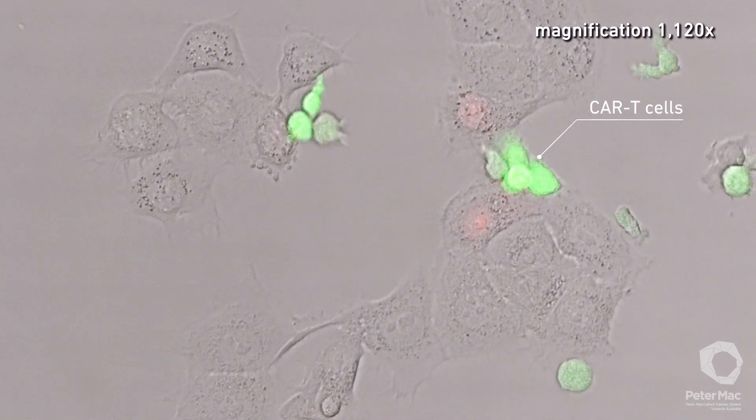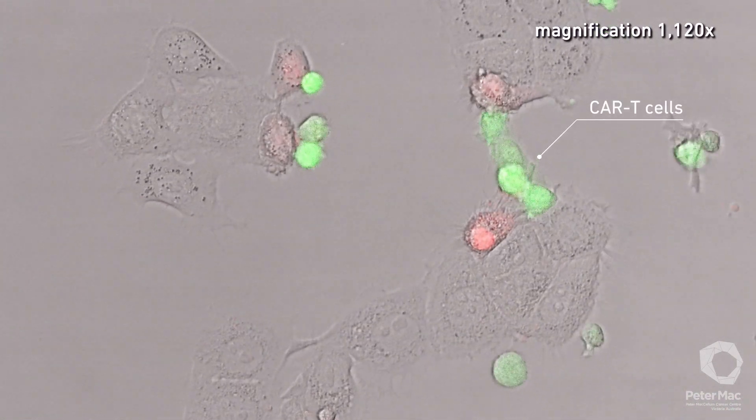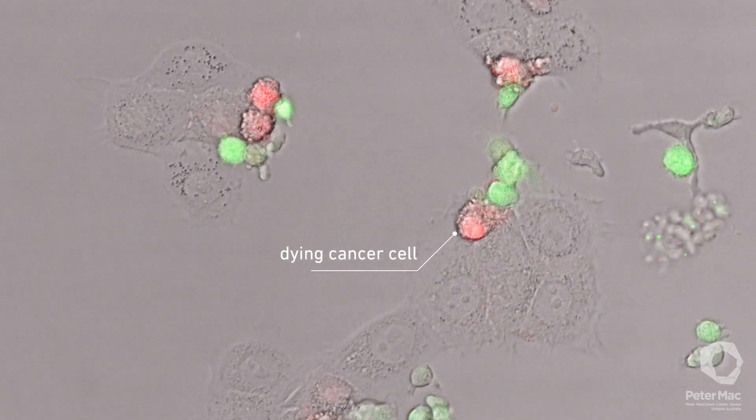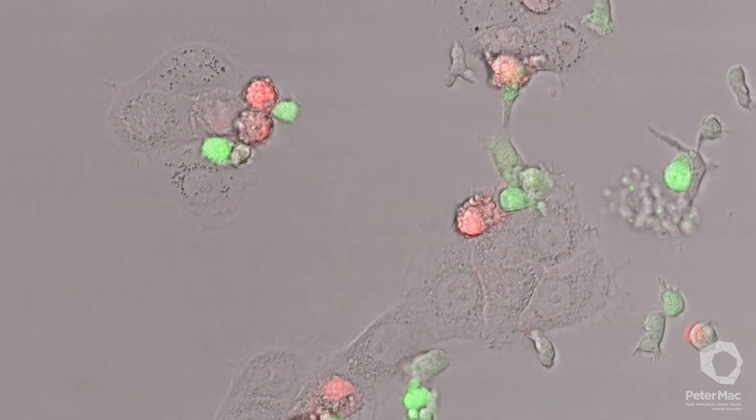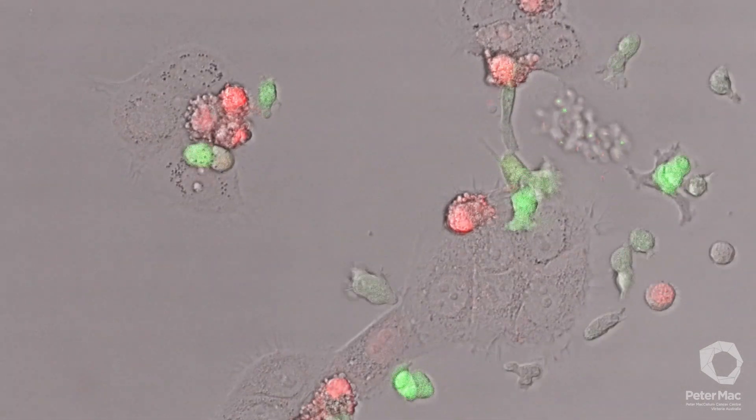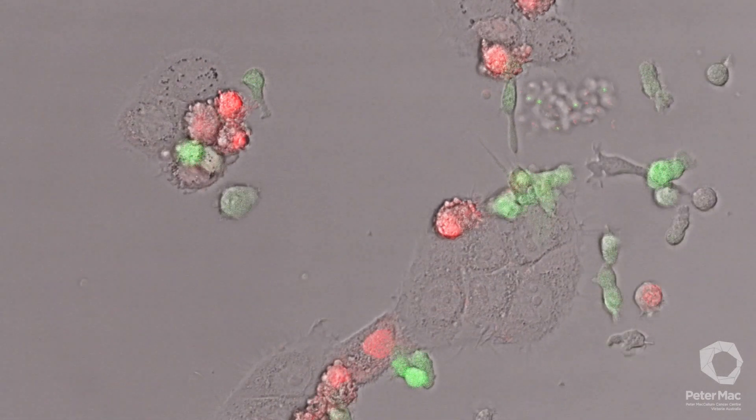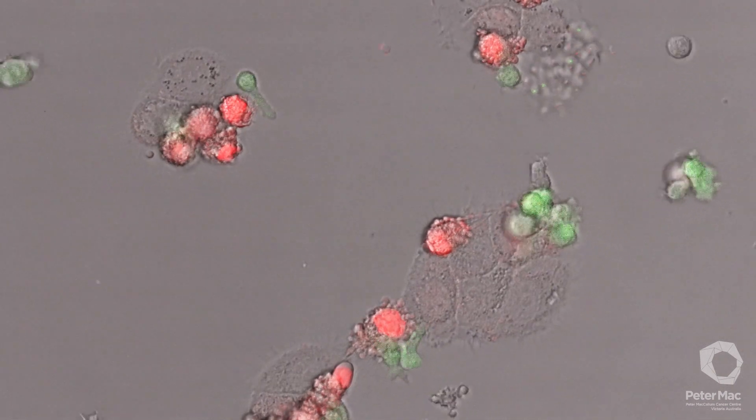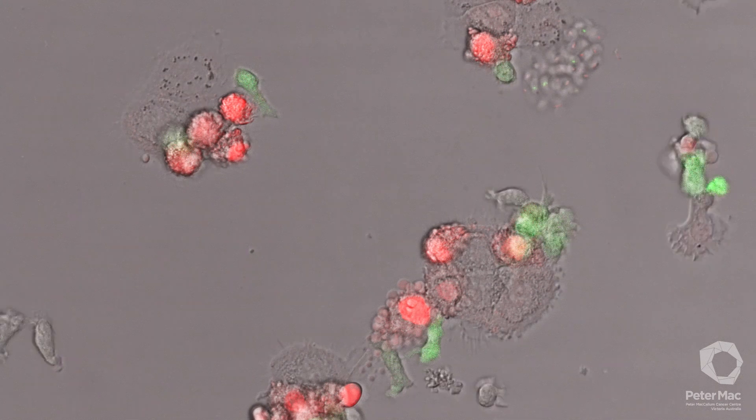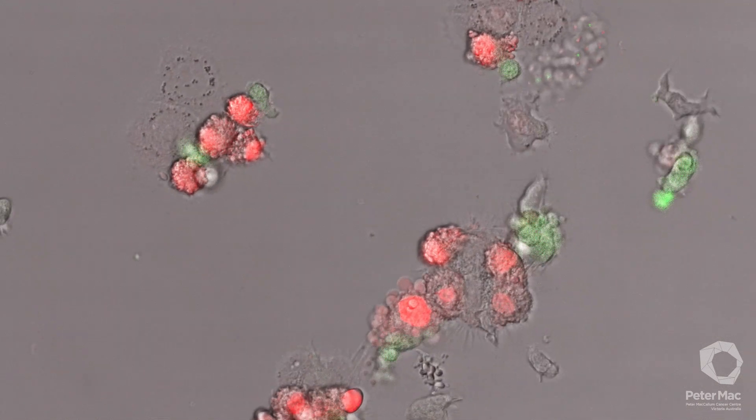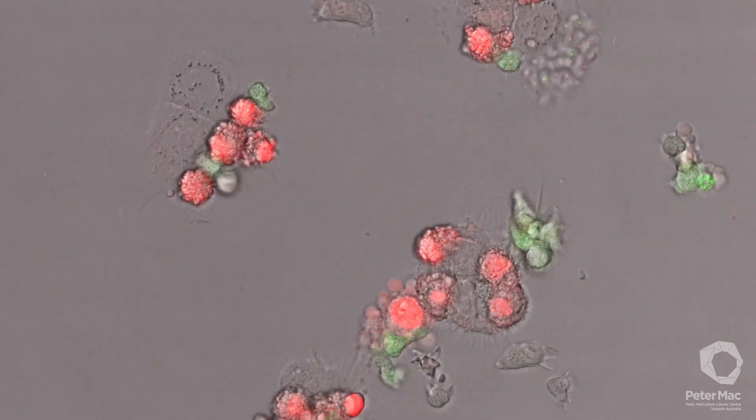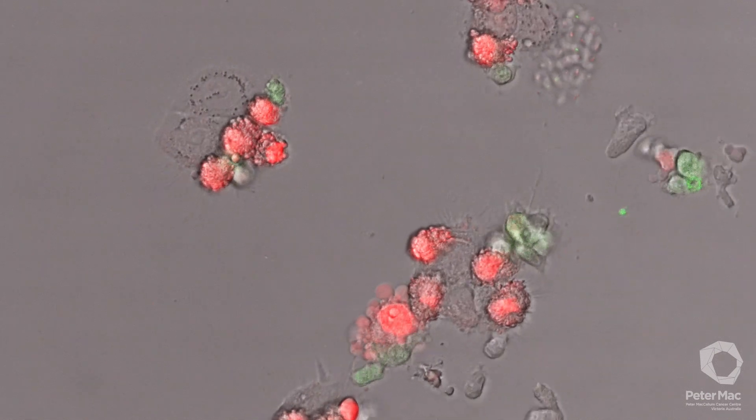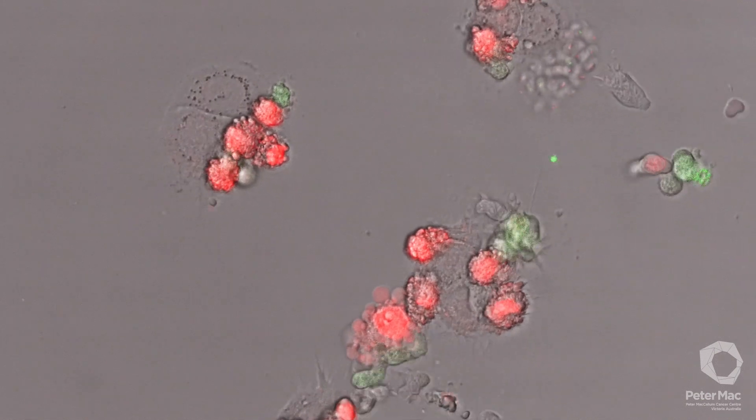Once activated, the green CAR T cells release toxic chemicals into the cancer cells, which kills them, indicated in red. CAR T cells are known as serial killers because they can kill, release and move on to kill other cancer cells in a cycle that can occur multiple times. This makes them very effective in the fight against cancer. CAR T cells can remain in the body and will reactivate if the cancer returns, even years later.